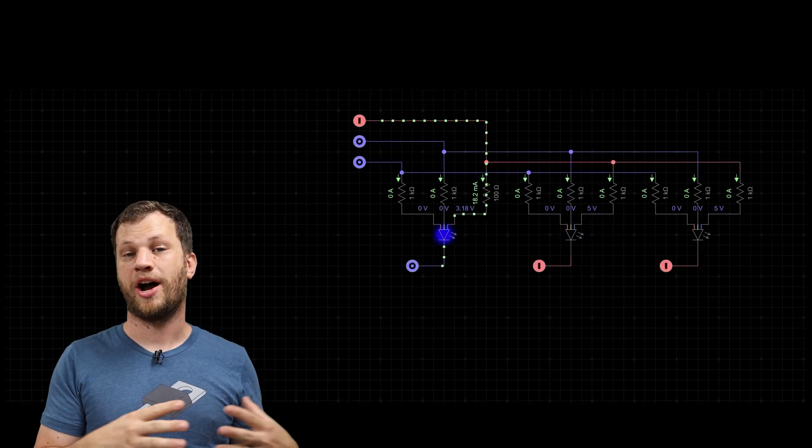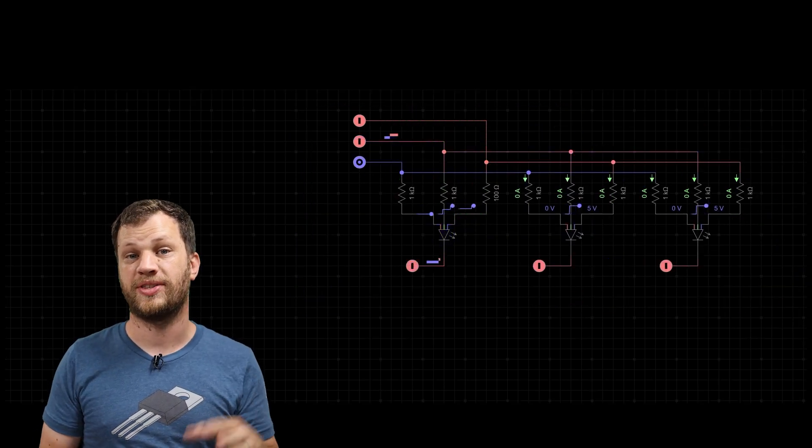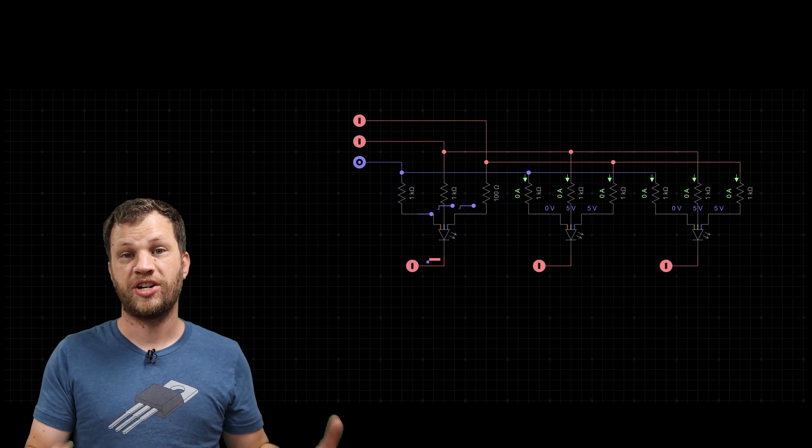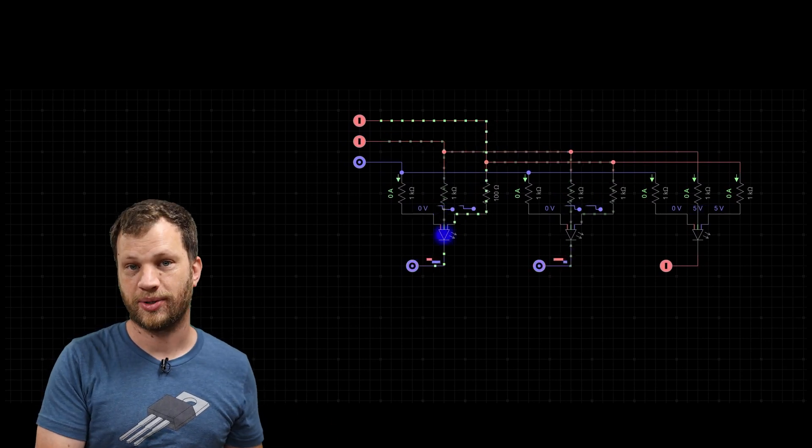If your LEDs used a common cathode instead of a common anode, this is what the circuit would look like. The function is very similar, it's just using the common cathode instead of the common anode. So that means I need three GPIO pins for the red, green, and blue cathodes, and then three GPIO pins for each LED.